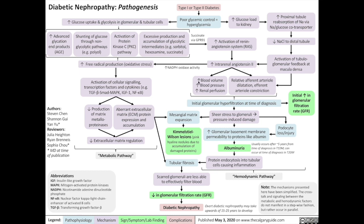Angiotensin 2 results in increased blood volume and blood pressure systemically, and also causes afferent arterial dilation and efferent arterial constriction, resulting in increased perfusion of the glomeruli. Therefore, initially in the pathogenesis of diabetic nephropathy, there will be an increase in the ability of the glomeruli to filter blood, corresponding to an increased glomerular filtration rate. Over time, the shear stress to the glomeruli as a result of pressure-induced damage will lead to both mesangial matrix expansion — resulting in Kimmelstiel-Wilson lesions on pathology — and podocyte loss and injury, which leads to increased glomerular basement membrane permeability to proteins like albumin, resulting in albuminuria. This is one of the reasons why diabetic nephropathy is the main cause of nephrotic syndrome.